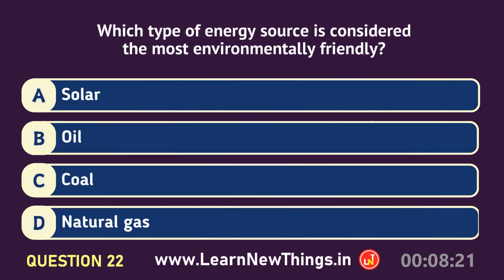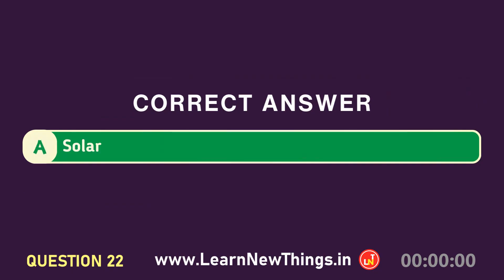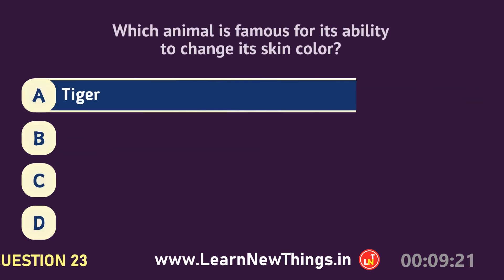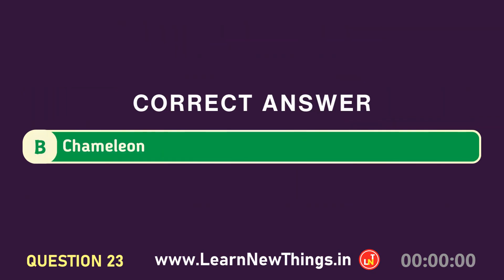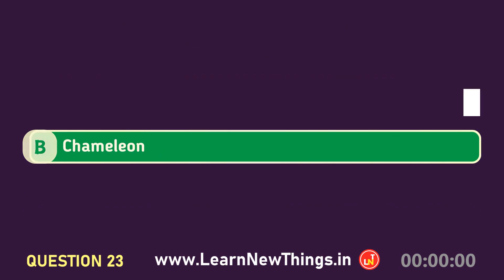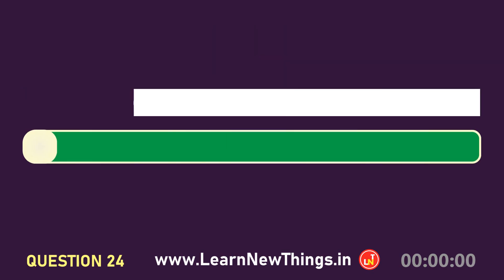Which type of energy source is considered the most environmentally friendly? Solar. Which animal is famous for its ability to change its skin color? Chameleon. During photosynthesis, which gas do plants release into the atmosphere? Oxygen.